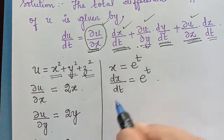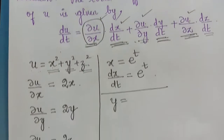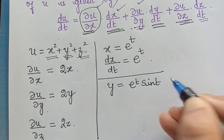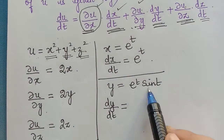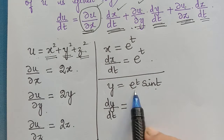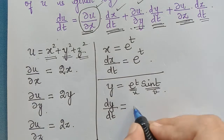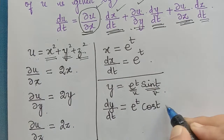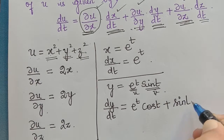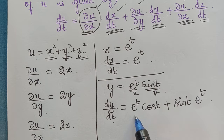Next, we have to obtain dy/dt. So y is given as e to the power t sine t. We have to differentiate y with respect to t. We get dy/dt by using the uv product rule, as e to the power t and sine t are in product. So: u as it is, e to the power t, multiplied by differentiation of sine t which is cos t, plus sine t as it is multiplied by differentiation of e to the power t which is e to the power t. Therefore, dy/dt equals e to the power t cos t plus e to the power t sine t.